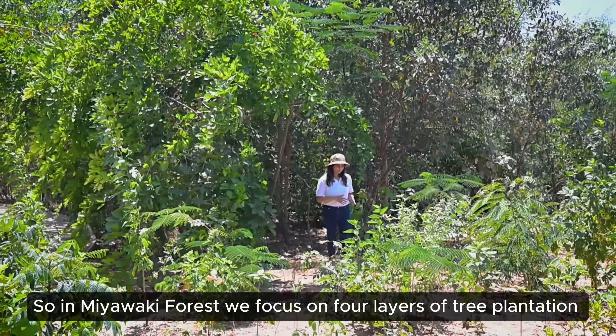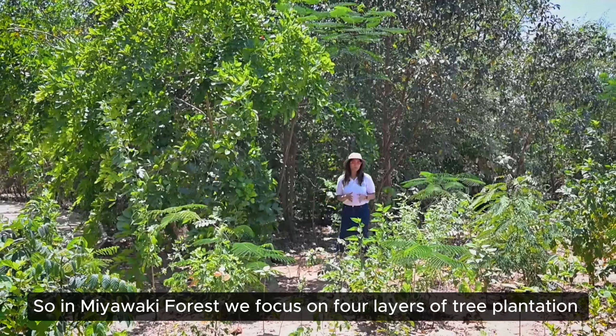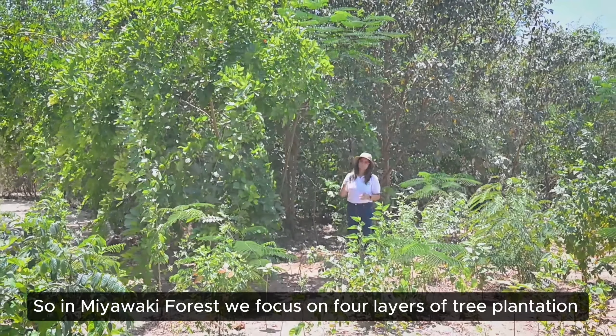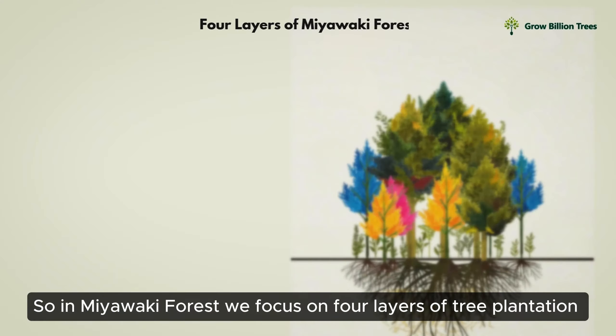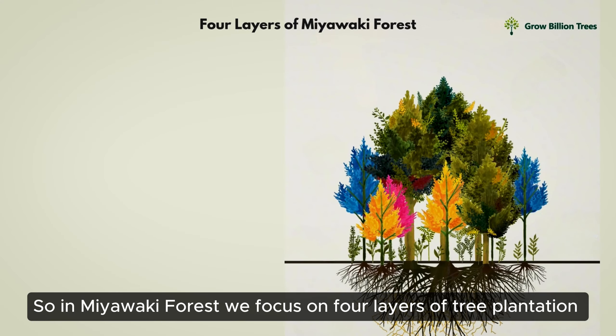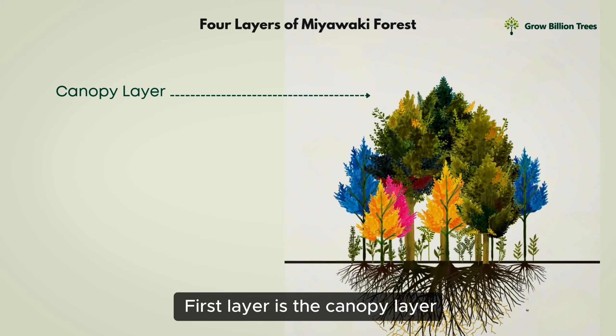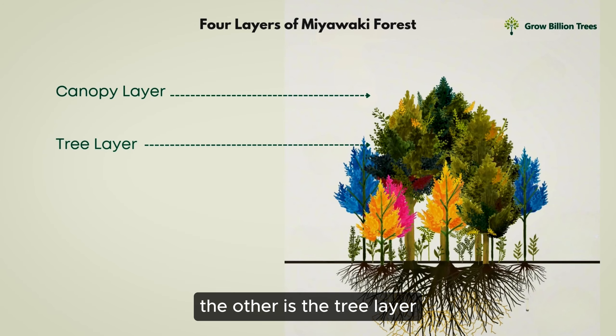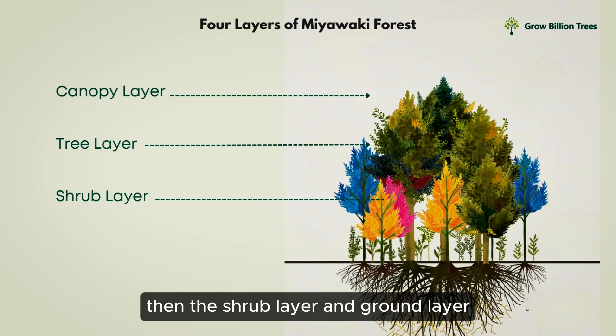In Miyawaki forest, we focus on 4 layers of tree plantation. The first layer is the canopy layer, the second is the tree layer, then the shrub layer, and finally the ground layer.